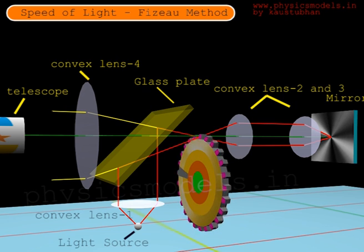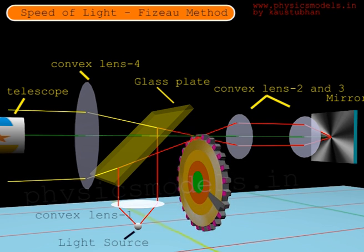The gear teeth is placed at the focal length of lens 2. Therefore, lens 2 once again makes the beams parallel to the principal axis. You can see those beams going all the way towards convex lens number 3 in the distance. The distance is actually 8.6 miles. Then the convex lens 3 focuses that beam onto a plain mirror.